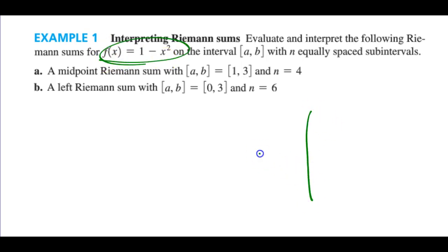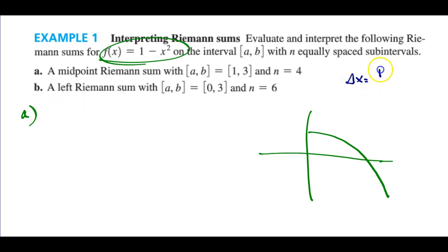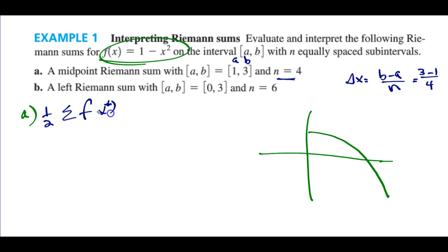They give me a function — I believe this is an upside-down parabola. In part A, we're going to use the midpoint formula. We can pop out delta x, which is b minus a over n from the formula sheet. It looks like n is 4, and with a and b given, 3 minus 1 over 4 gives me one half. You can see that some area is positive and some is negative, which is why we're talking about net area here.